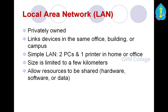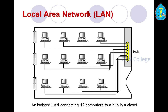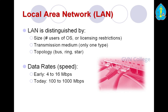A LAN is an isolated network connecting computers to a hub. LAN is distinguished by size — the number of operating systems or users, or licensing restrictions; transmission media — only one type of transmission medium used by cable; and topology — bus topology, ring topology, or star topology. Data rates: in the earlier stage LAN covered 4 to 16 Mbps; today 100 to 1000 Mbps are covered by the network.